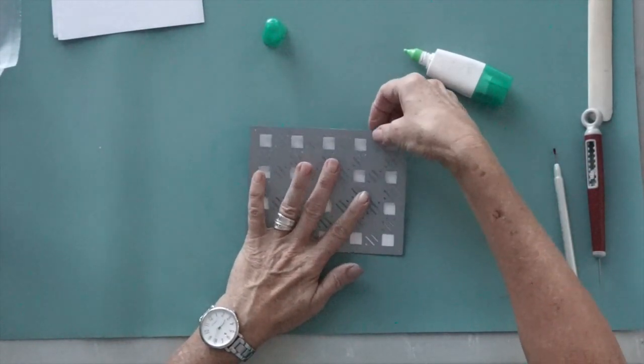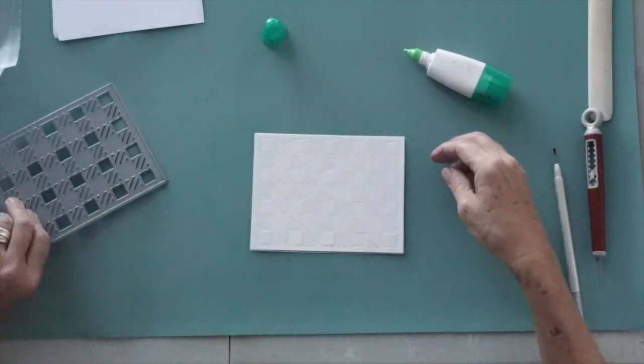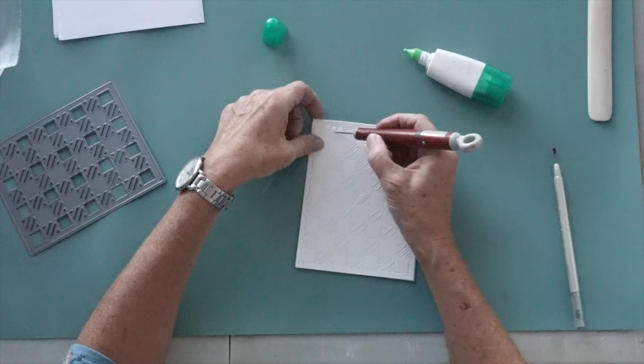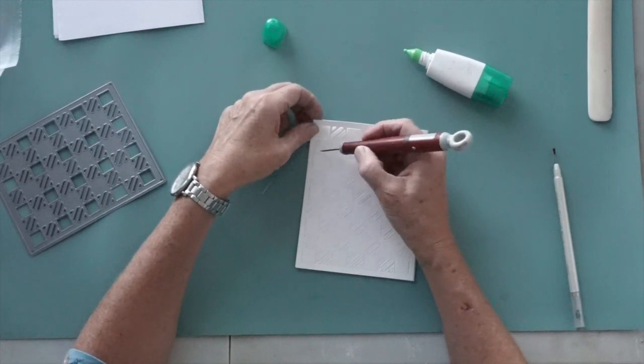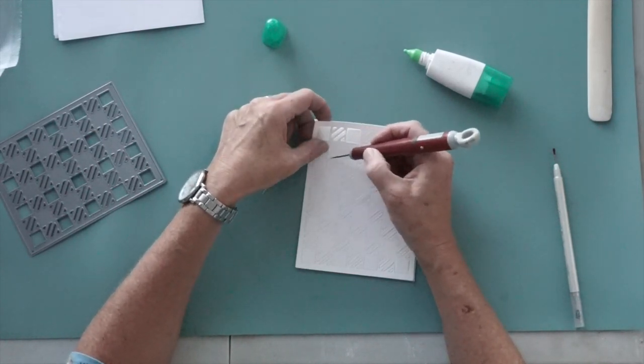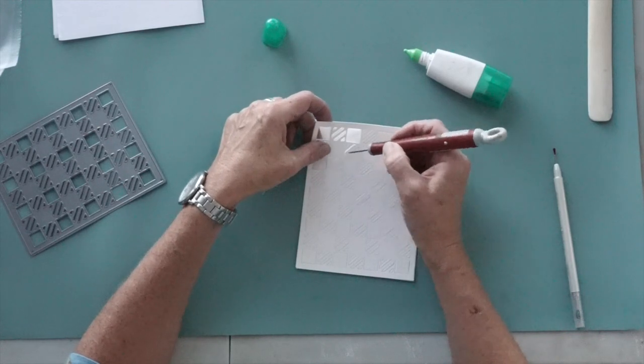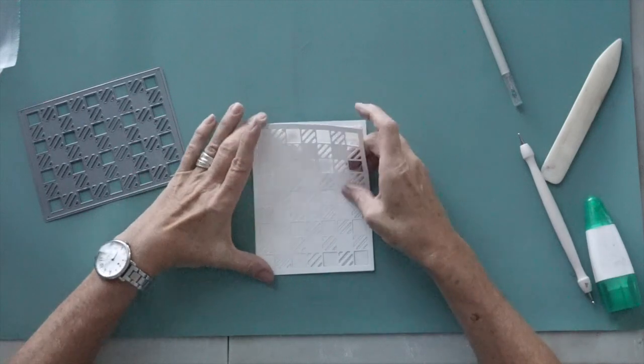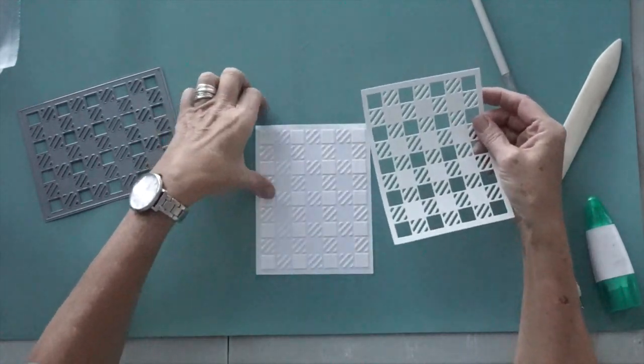So at this point you're probably thinking wait, where's the blue watercolor paper piece? Well what I did was repeat my steps with a piece of plain white watercolor paper so that I would have a matching and reverse set of what I've got with the blue watercolor paper.